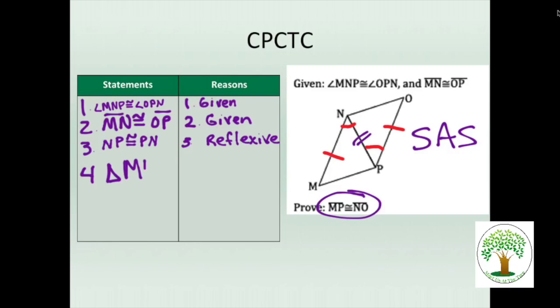Brett, what goes with M? On the other triangle. O. Very good. And N? P. Very good. So OPN. I don't have enough room to squish all that in there. Number four, side angle side. Number five, now that we have the triangles are congruent, we can state any corresponding part will be congruent to each other. MP just so happens to be corresponding to NO.